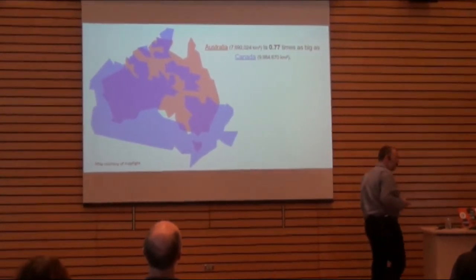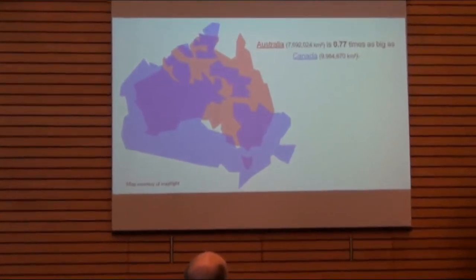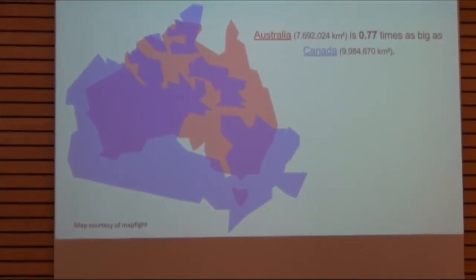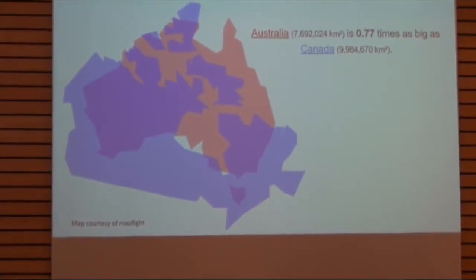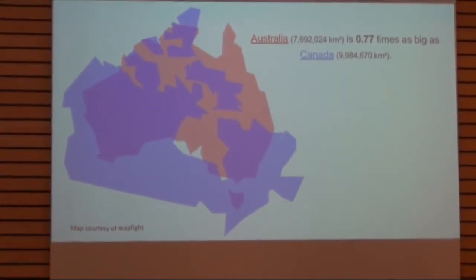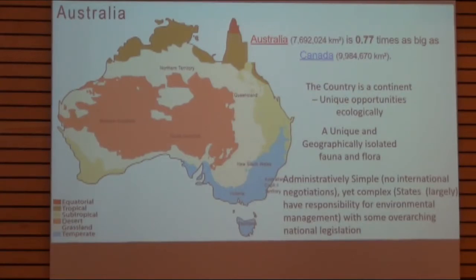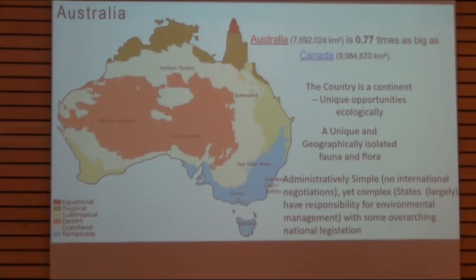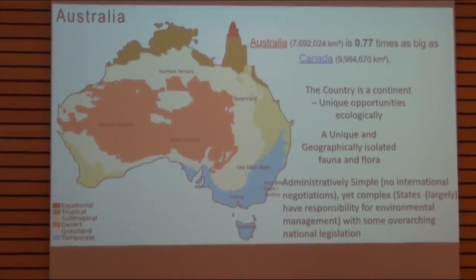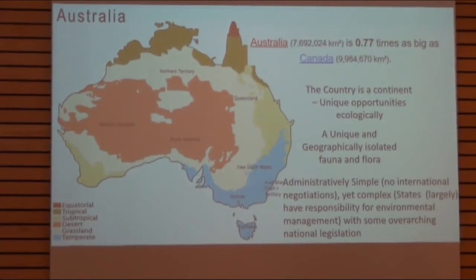Just to put things in context: there's a nice website called Mapfight where you can see the sizes of different countries. Australia is quite a reasonably sized country — three quarters as big as Canada or about the same size as the continental US. It's quite unique in that it's a country that's also a continent, isolated from the rest of the world by huge oceans, with really unique geographically isolated fauna and flora. We don't have anything remotely like your forest — we've got eucalypts and acacias, so very different systems.